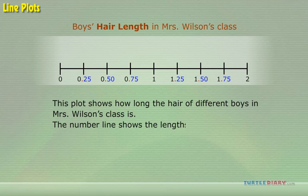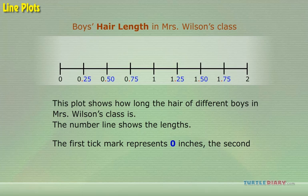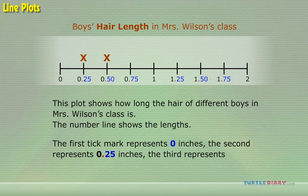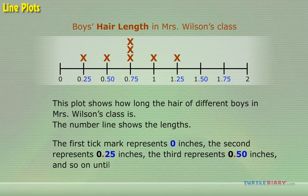The number line shows the lengths. The first tick mark represents 0 inches. The second represents 0.25 inches. The third represents 0.50 inches. And so on, until 2 inches.